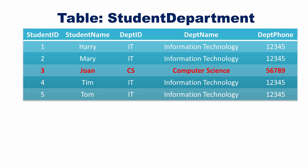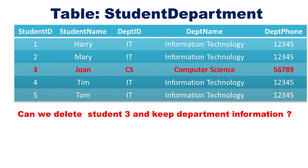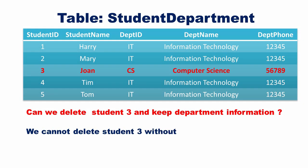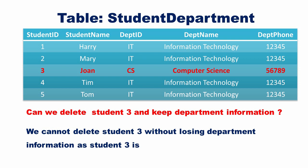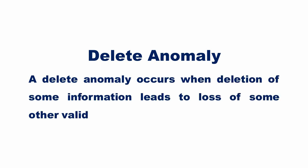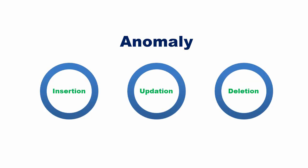Student 3 is the only student in the Computer Science department. Can we delete student 3 and still keep the department information? We cannot delete student 3 without losing the department information, since student 3 is the only student of that department. When we delete student 3 from the database, complete information about the Computer Science department will be lost. This problem is known as delete anomaly — a delete anomaly occurs when deletion of some information leads to loss of other valid information.